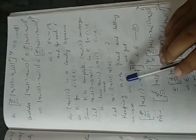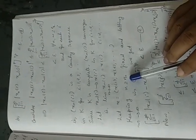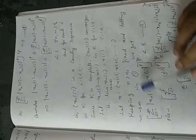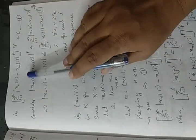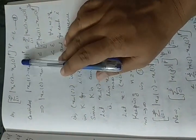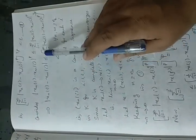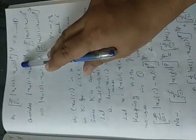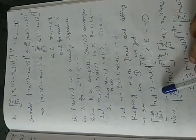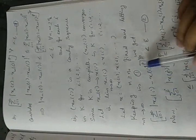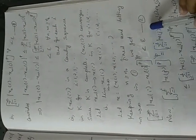For that, we keep N ≥ N₀ fixed and let M tend to infinity in the Cauchy inequality. As M tends to infinity, Xm(t) tends to X(t). So (Σ_{i=1}^∞ |Xn(i) − X(i)|^p)^{1/p} < ε.